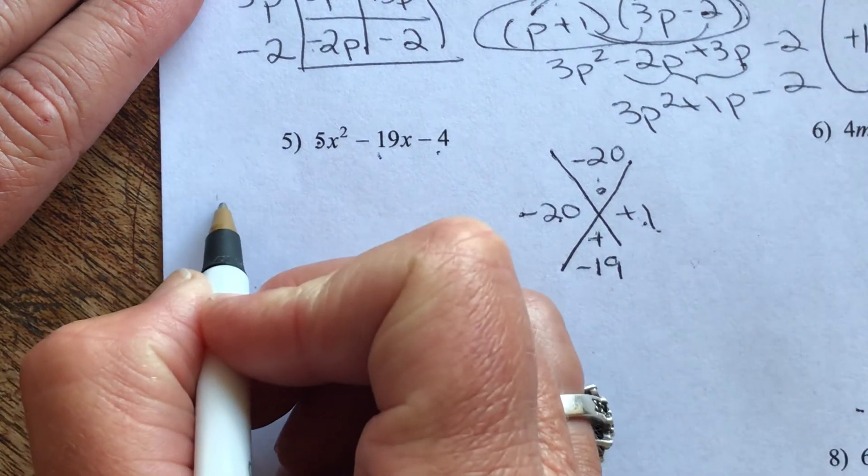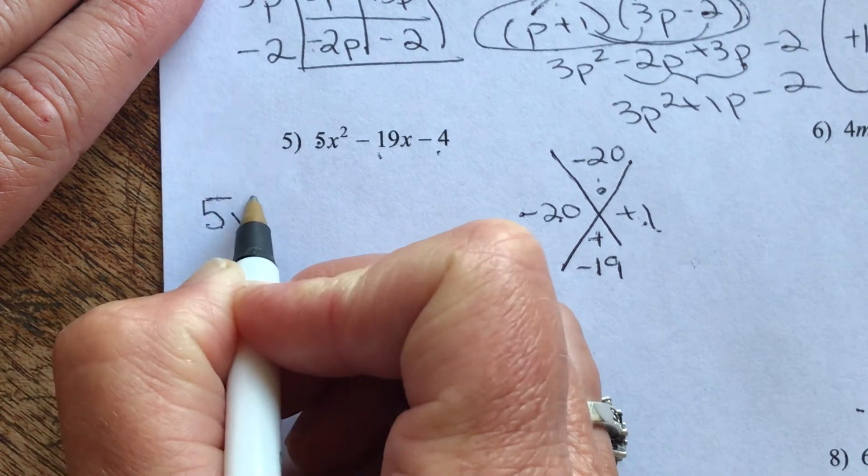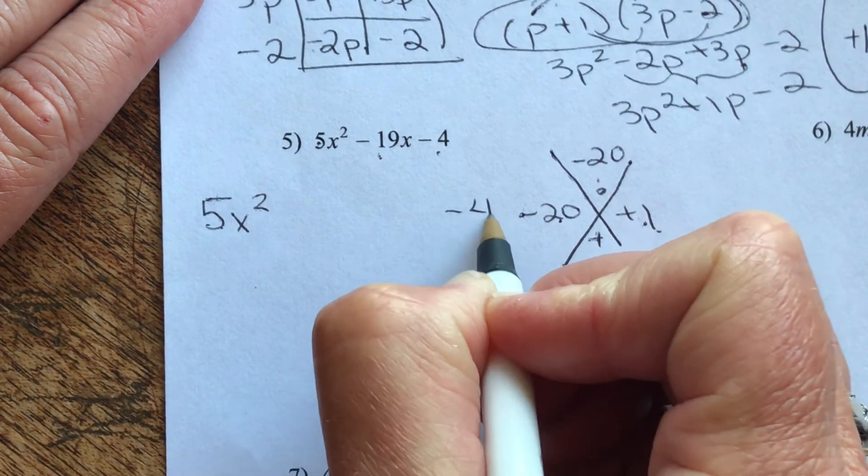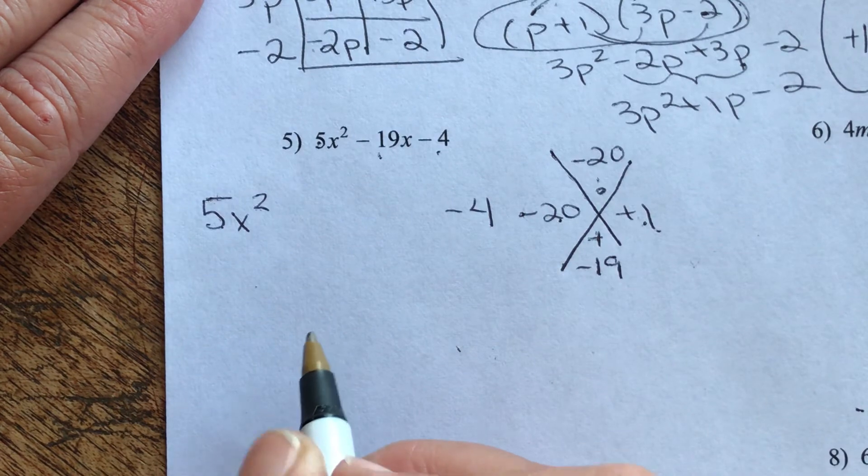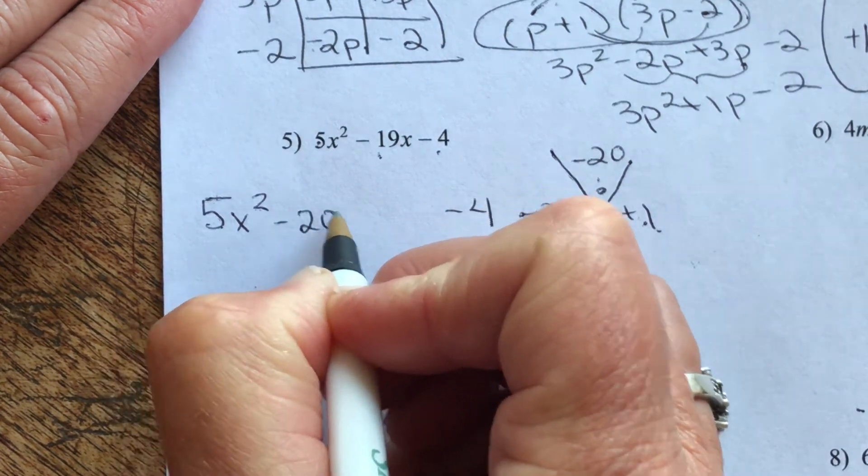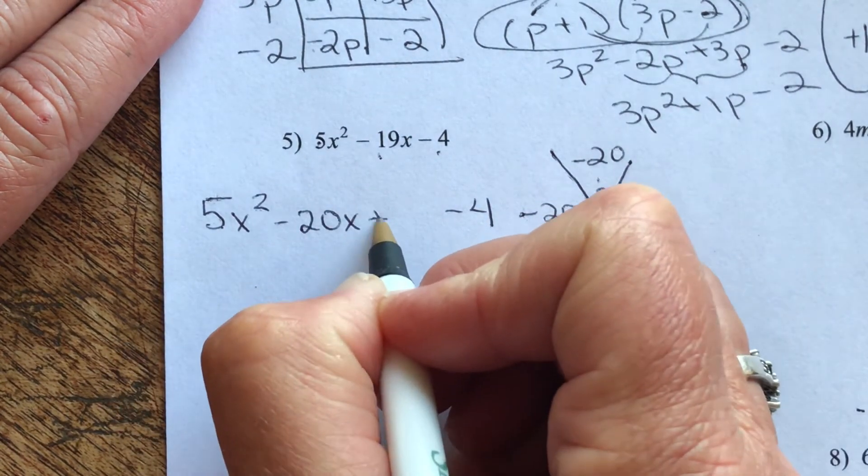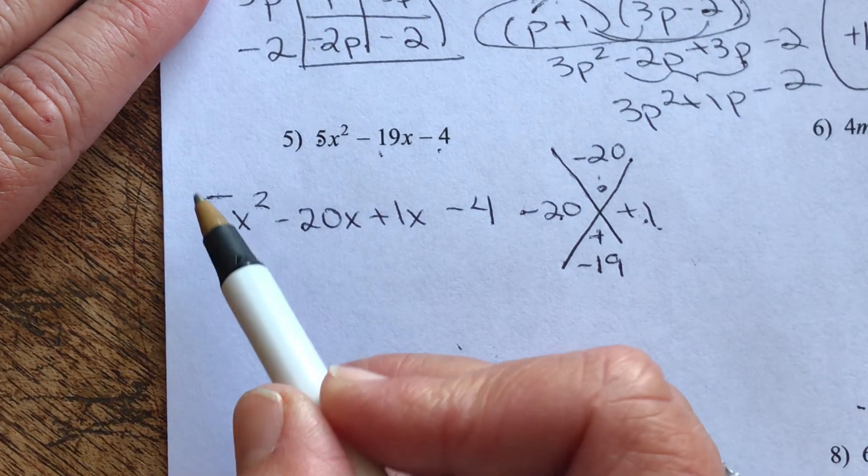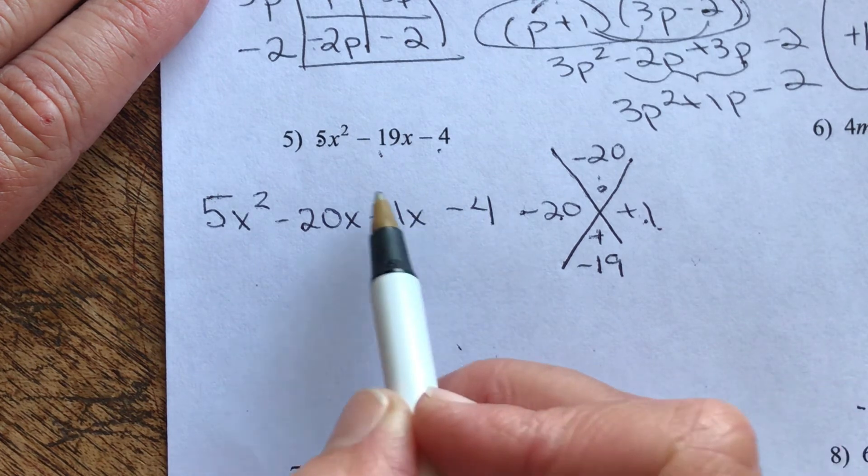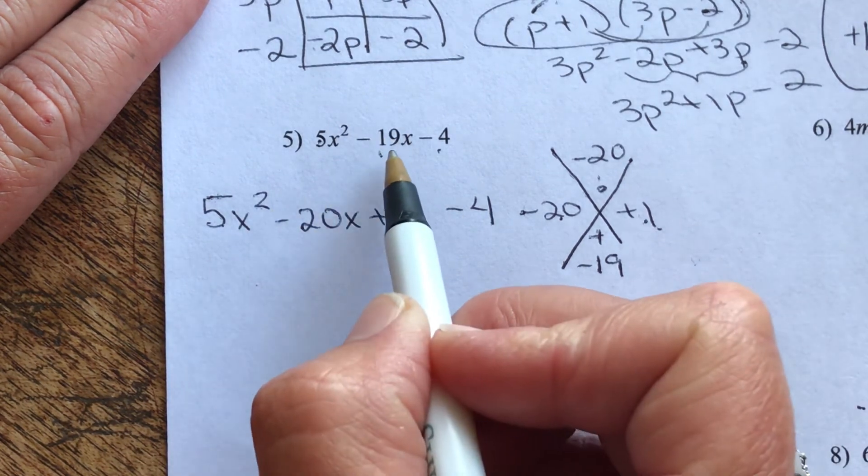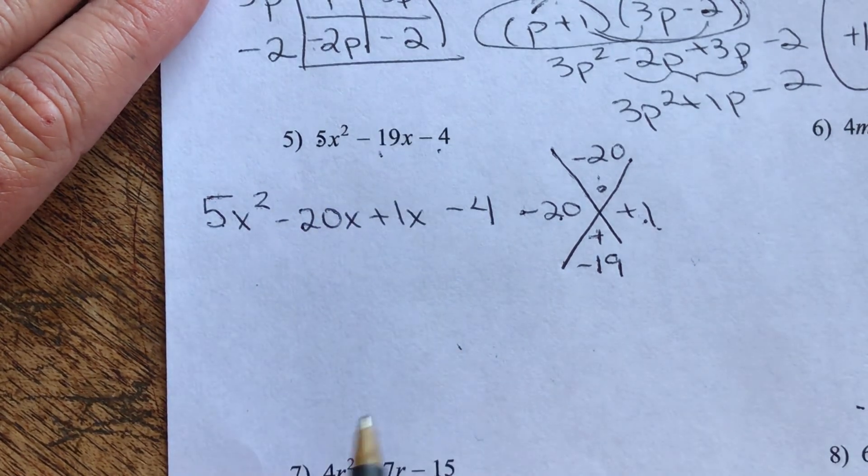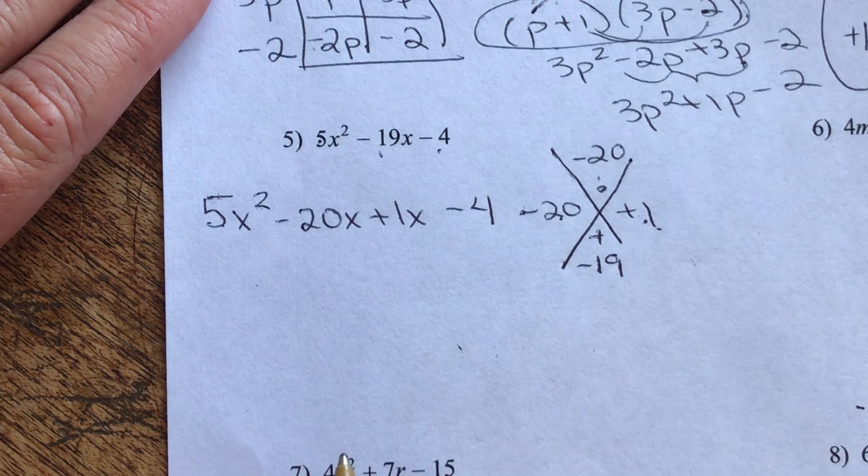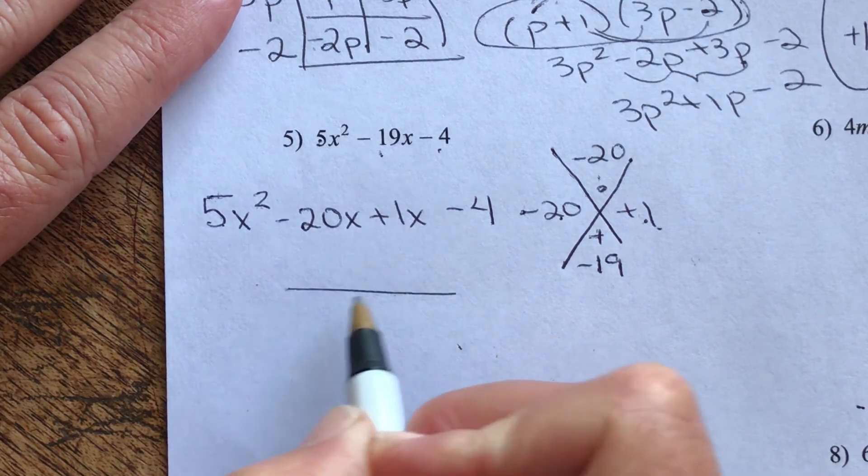So we took this middle term and we split it into this. Now let's rewrite. Remember, our front term never changes. Our back term never changes. It's our middle term that splits. And in this case, we have a negative 20x and a positive 1x. Cool. Now look, again, front term didn't change. Back term didn't change. Middle does equate to that. So we know we really haven't changed anything. We've just written it differently.